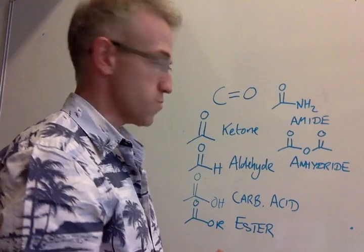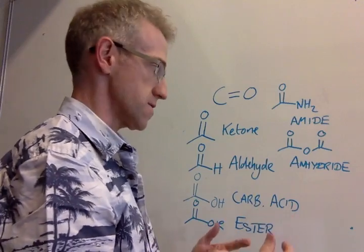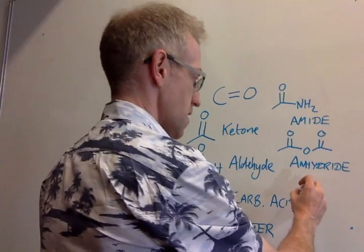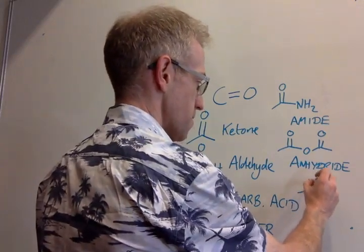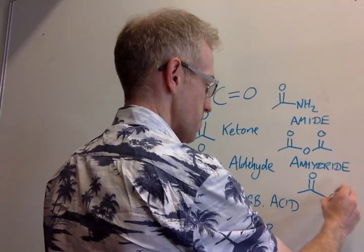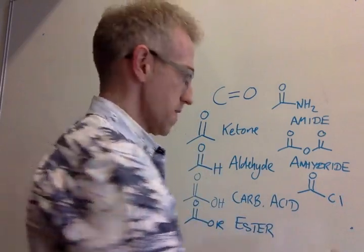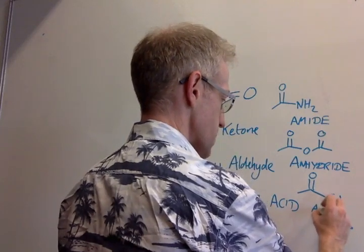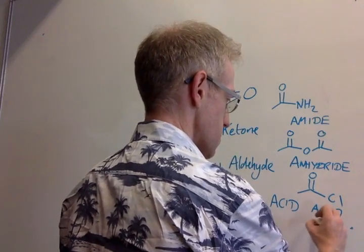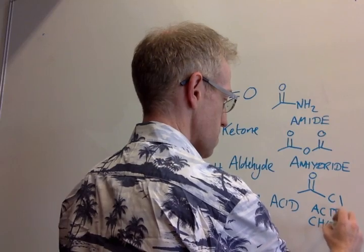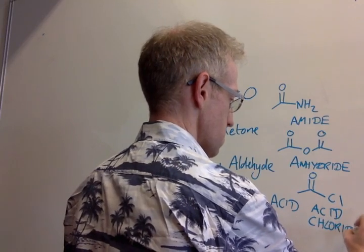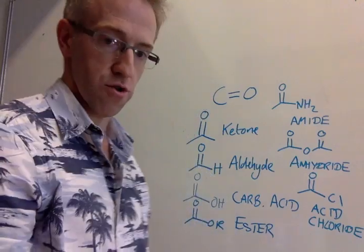And the last one that we'll see a lot in terms of its use in synthesizing some of these compounds is where the carbonyl is bonded to a chlorine, and we often call this an acid chloride, or an acyl chloride.